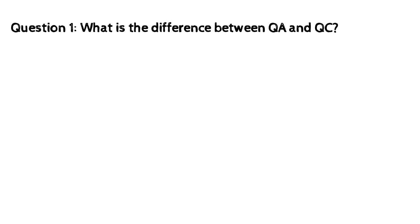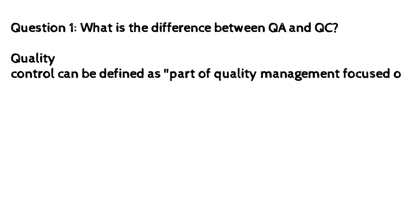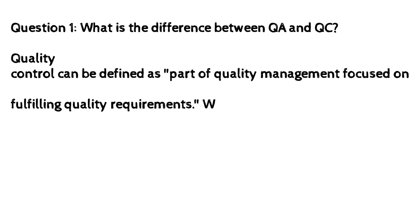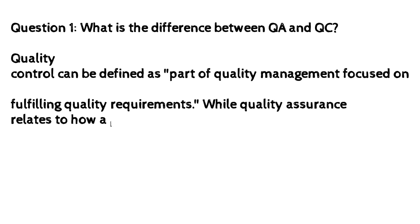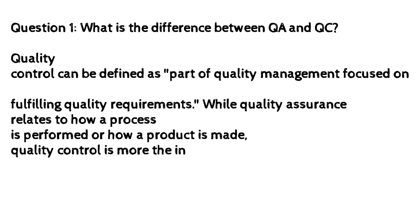Question one: What is the difference between QA and QC? Quality control can be defined as part of quality management focused on fulfilling quality requirements, while quality assurance relates to how a process is performed or how a product is made. Quality control is more the inspection aspect of quality management.